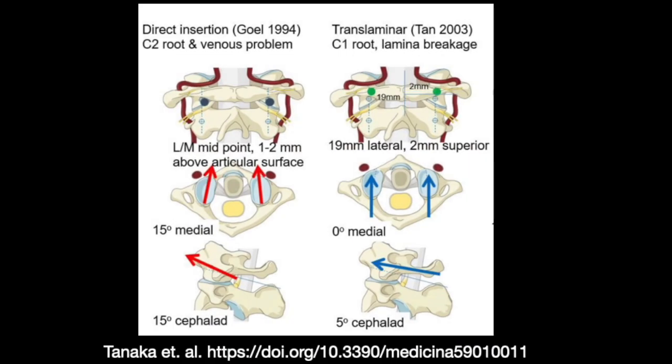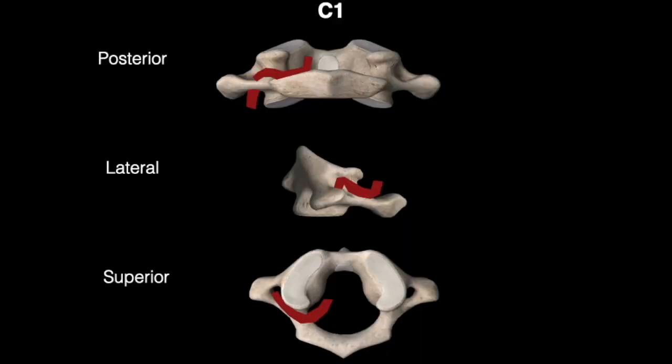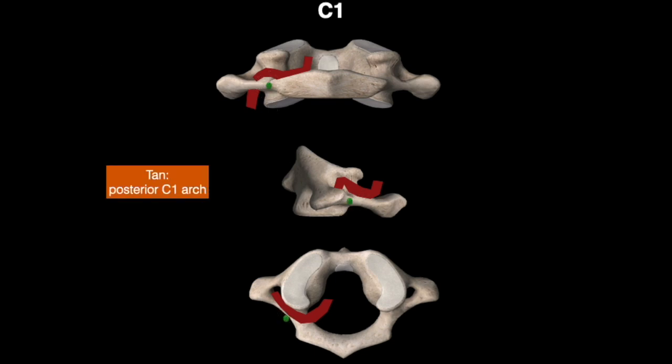For the entry point of C1 lateral mass screws, there are two common entry points. The first is the Goel entry point at the C1 lateral mass: from medial to lateral it is at the midpoint, and from superior to inferior it is 1-2 mm above the C1-C2 joint. The screw trajectory is typically 15 degrees medial and 15 degrees cranial toward the anterior tubercle. The second is the Tan entry point at the C1 posterior arch: 19 mm from the lateral border and 2 mm above the C1-C2 joint, with a trajectory of 0 degrees medial-lateral and 5 degrees cranial. The Goel point is in the lateral mass; the Tan point is at the edge of the posterior ring just above the lateral mass.